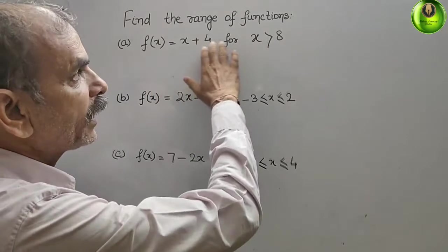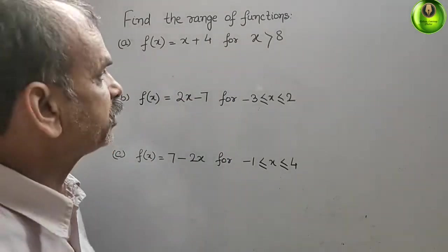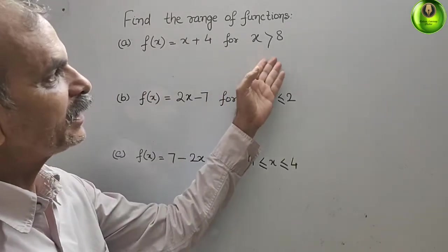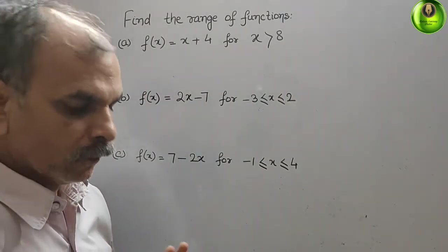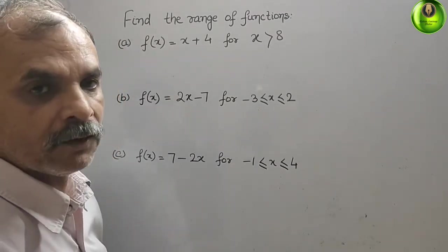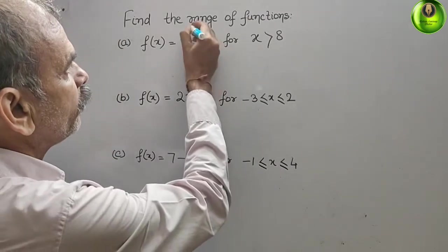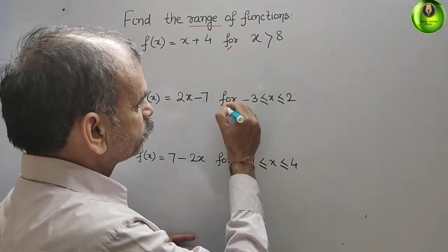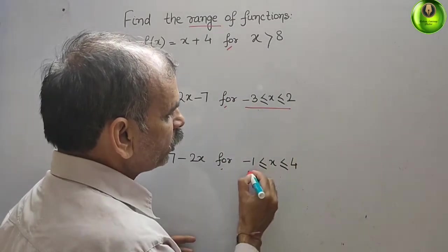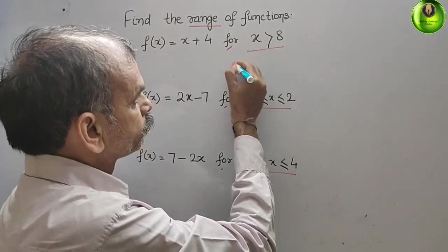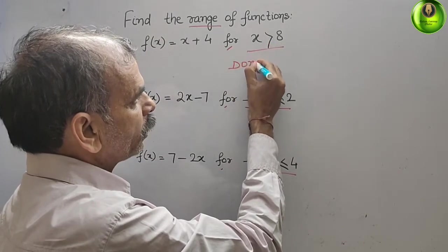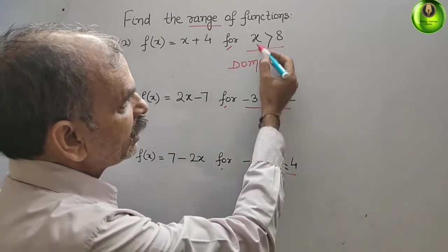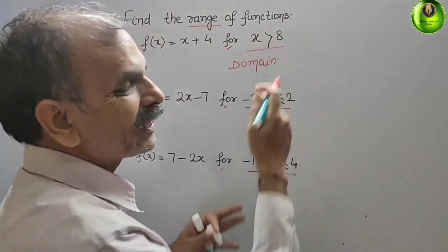The question is to find the range of functions. They have given f(x) = x + 4 for x greater than 8. We have to find out the range. The given condition for x is your domain, so this is your domain. Since x is greater than 8, we will take x = 8 first.